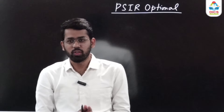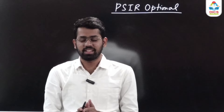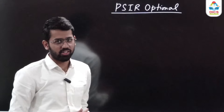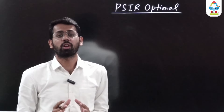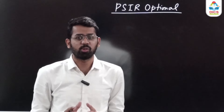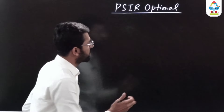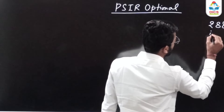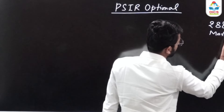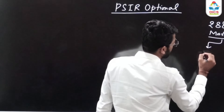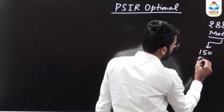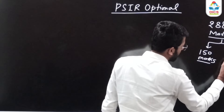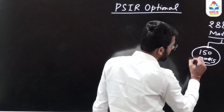Welcome everyone, my name is Abhishek Obad Jain. Today we will discuss Political Science and International Relations (PSIR) optional. I scored one of the highest scores of 288 marks in PSIR optional in UPSC 2022 — 150 marks in Paper 1 and 138 marks in Paper 2, both out of 250.